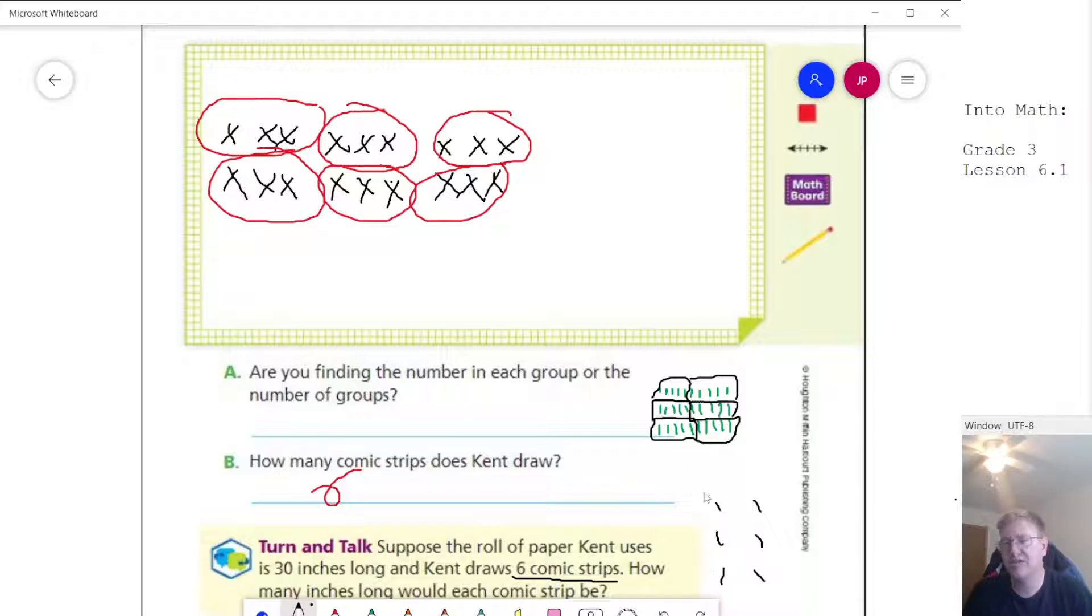We could also find the number by making 30 counters and putting them into groups of 6, but our number of counters that we circle would tell us how many inches long each comic strip would be. Again, we have a couple options when working with that.